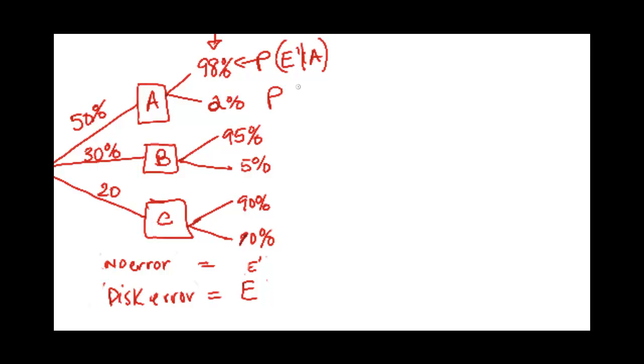The next one is the probability that there is an error given that it came from A. And following that same logic, this would be from B, from B.